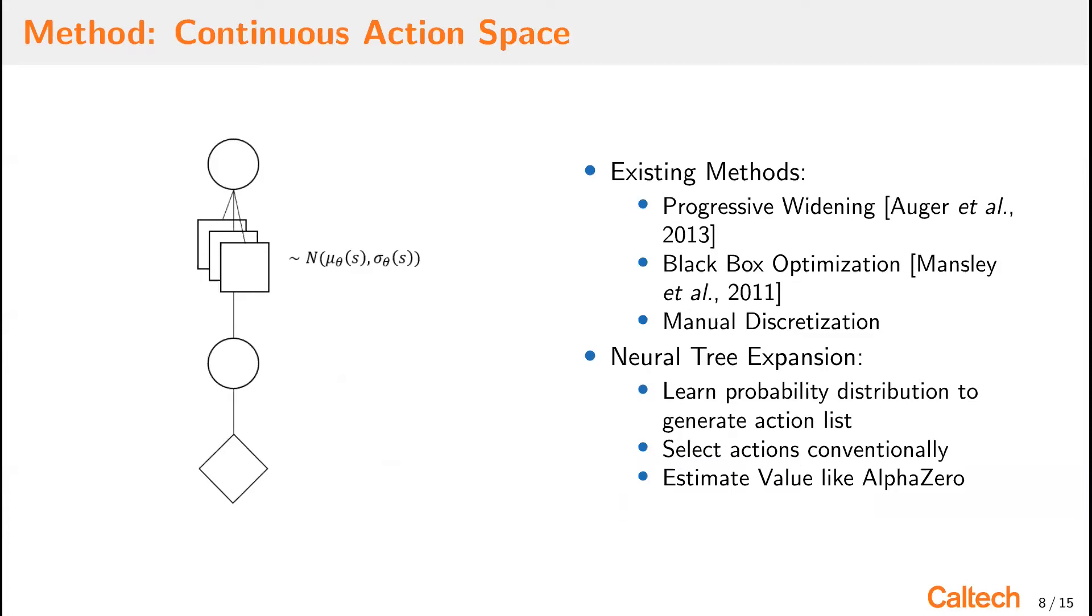The first extension we have to consider is within the tree, how to account for the continuous action space for robotic settings. There exist methods to handle this case, such as progressive widening, black box optimization, and manual discretization. Neural tree expansion tries to address this problem with a data-driven method. First, we learn a probability distribution to generate an action list. Then we select actions conventionally, and we estimate value like AlphaZero. In the picture on the left, we can see that the actions, the boxes, are generated by sampling a normal distribution, where the mean and variance are parametrized by the weights of the neural network, and the input to the neural network is the state.